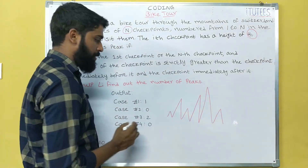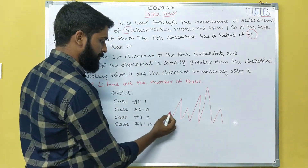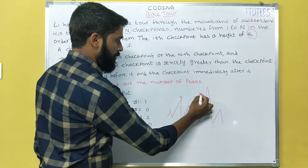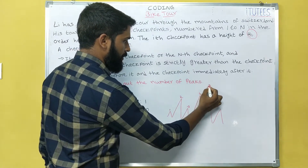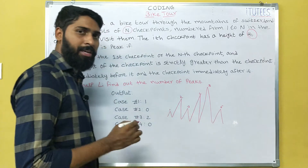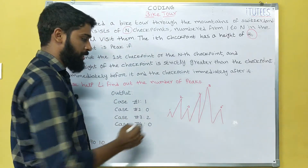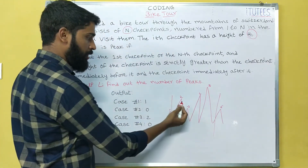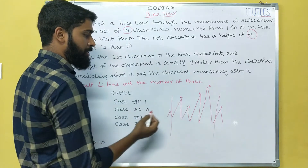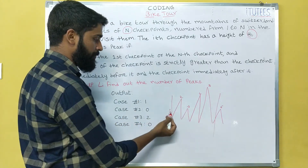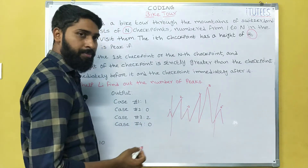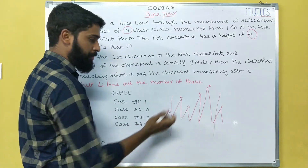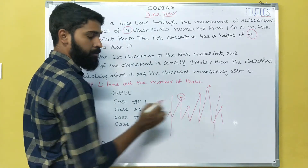Consider this example. We have checkpoints: first, second, third, fourth, fifth, and sixth — so n equals 6. We cannot consider the first and last, so we ignore 1 and 6. The second checkpoint is a peak if the ones before and after it are both less than it — meaning it is greater than those two.